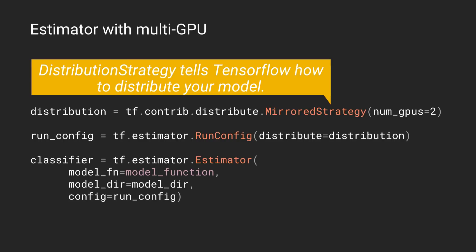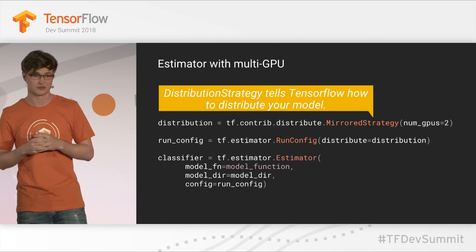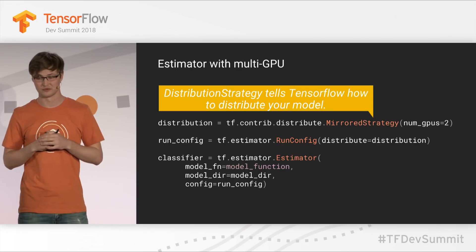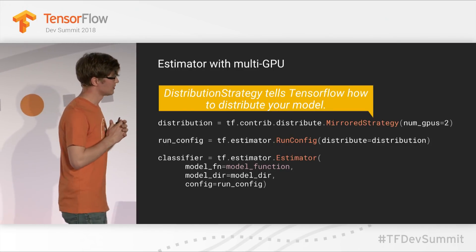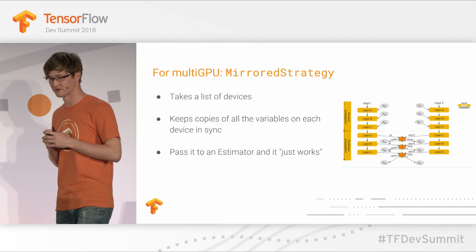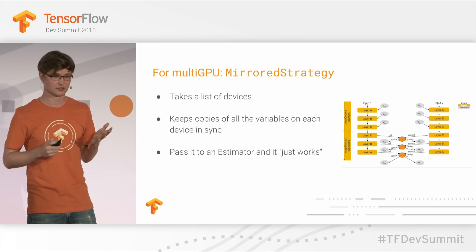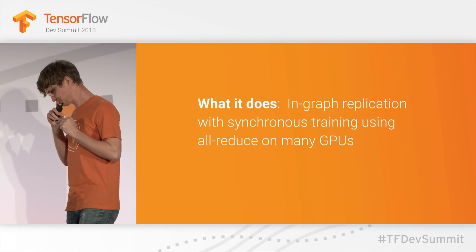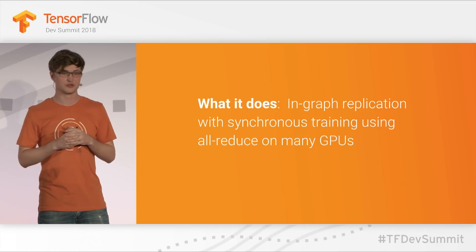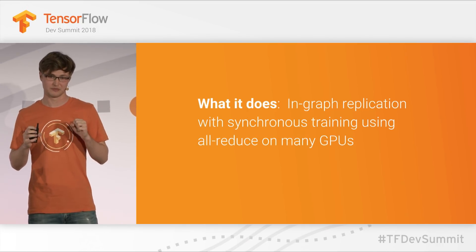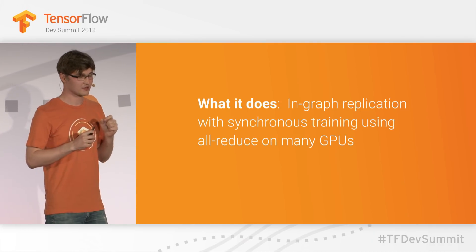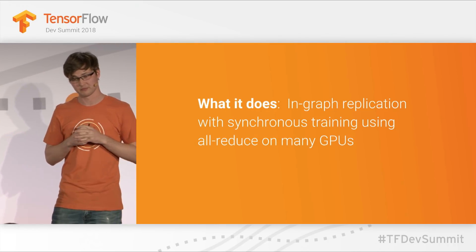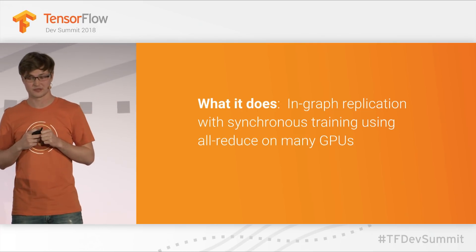MirrorStrategy can take a number of GPUs or a list of GPUs to use, or you can give it no arguments at all and it will figure out which GPUs to use. MirrorStrategy works exactly as described — it replicates your model and uses all-reduce for communication. Gradient updates from all GPUs are combined before updating the weights. Each copy of your model on every GPU is part of a single TensorFlow graph — this is in-graph replication with synchronous training using all-reduce on many GPUs.